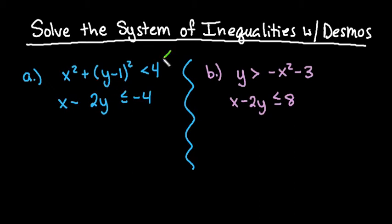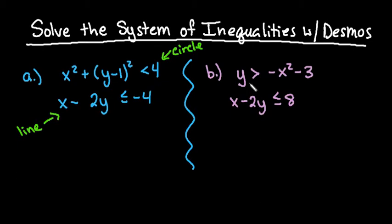So what we have here is a circle and a line. What I'm going to do is graph both of these using Desmos and see where the region is that they overlap. If you need to, go ahead and write this down on a piece of paper and pause, then get your Desmos so that you can try typing it in at the same time.